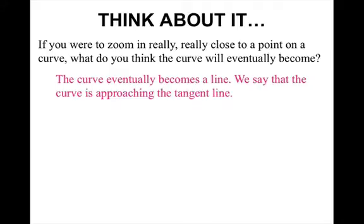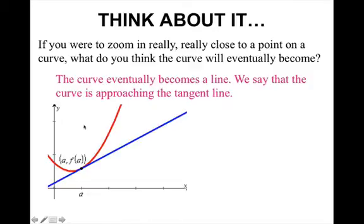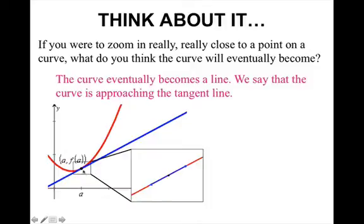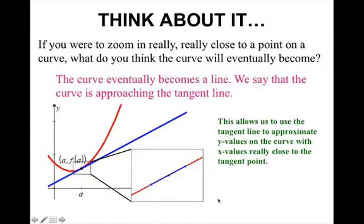You should have thought a line, because we say that the curve is approaching the tangent line. So if we were to look at this, here we have a curve and we have the tangent line. And if we were to zoom in really close around the point of tangency, you would see that the curve is the same as the tangent line. So this allows us to use the tangent line to approximate y values on the curve with x values really close to the tangent point.